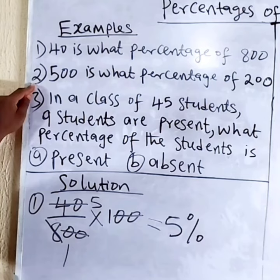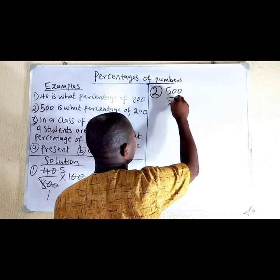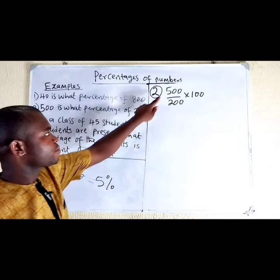We look at number 2. 500 is what percentage of 200? So we have 500 over 200 times 100.